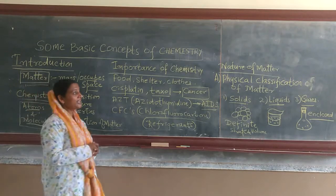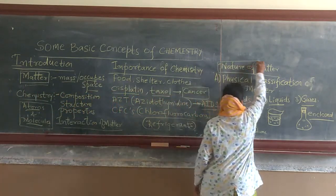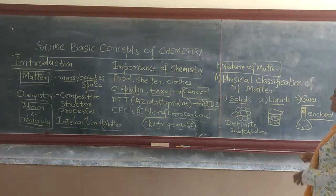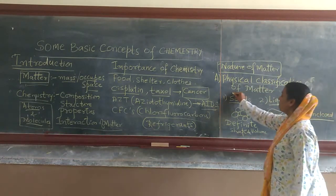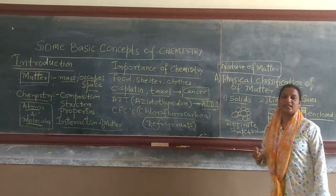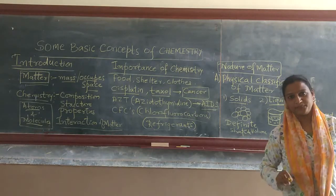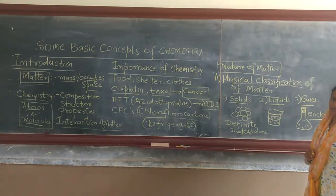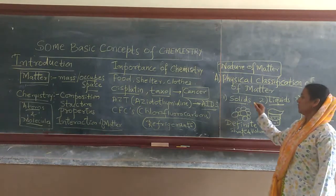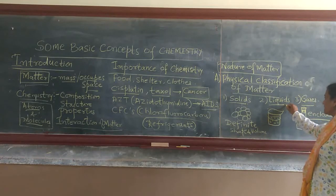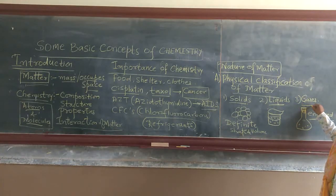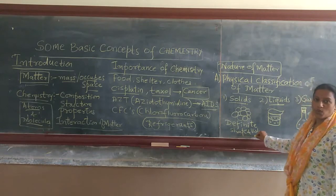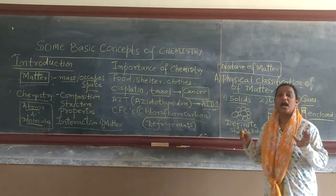Now let us go to the nature of matter. Matter can be broadly classified in two ways: the first is physical classification of matter, and the second is chemical classification of matter. Let me begin with physical classification. Matter can be classified into three states. The first is solids. Solids have definite shape and definite volume.